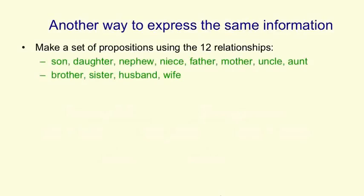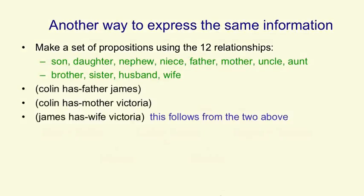The information in these family trees can be expressed as a set of propositions if we make up names for the relationships depicted by the trees. So we're going to use the relationships son, daughter, nephew, niece, father, mother, uncle, aunt, brother, sister, husband, and wife. And using those relationships, we can write down a set of triples, such as Colin has father James, Colin has mother Victoria, and James has wife Victoria.